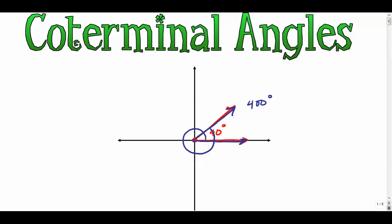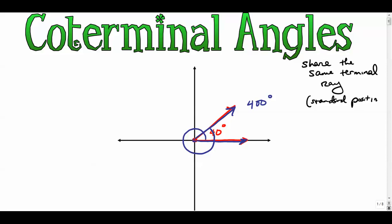These two angles are called coterminal angles — angles that share the same terminal ray or terminal side. They're in standard position; they don't both have to be positive or negative. The key idea is that one full rotation is 360 degrees, which is one revolution.